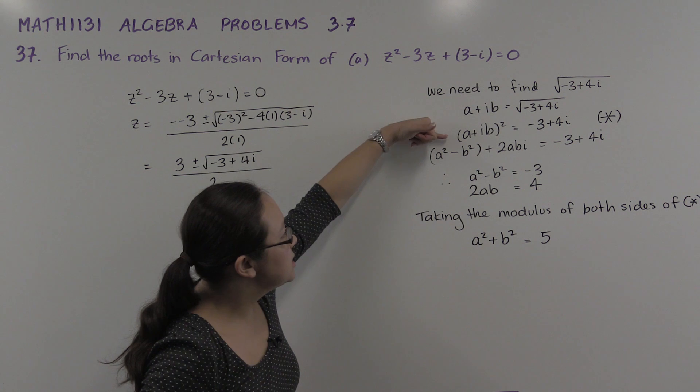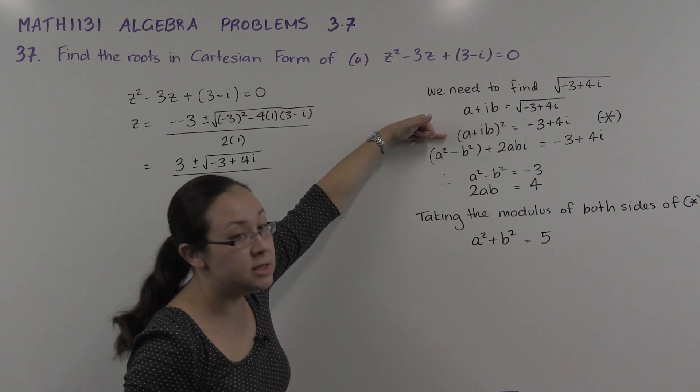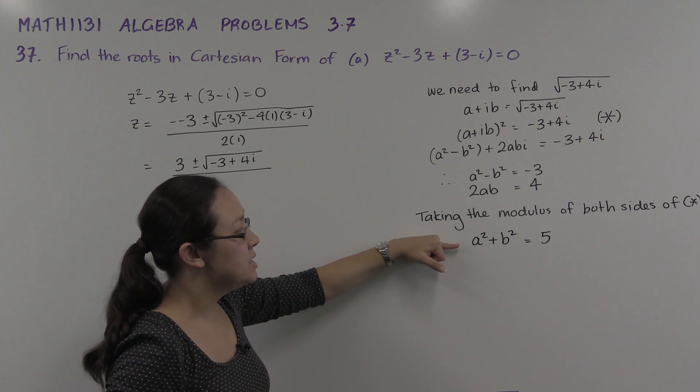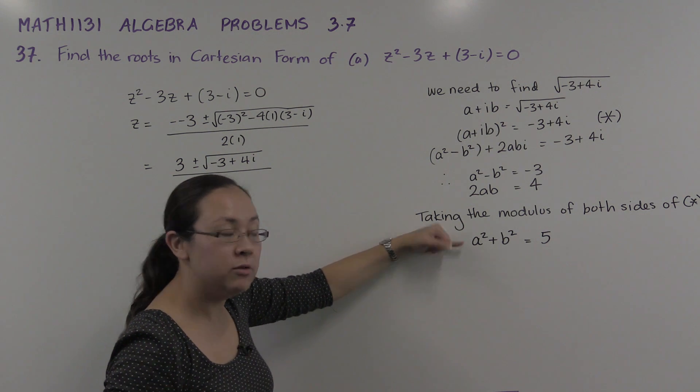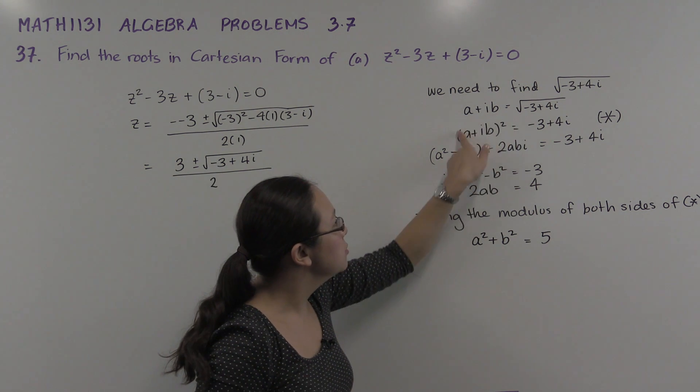So if we look at this side and take the modulus of both sides, we will get this equation: a² + b² = 5. So we're using a bit of a rule over here.